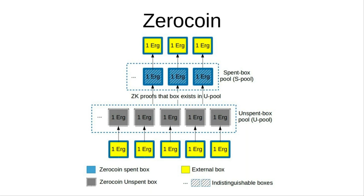This tells us that the s-pool must never remove serial numbers, making it monotonically increasing. Similarly, the u-pool is also monotonically increasing because boxes are never removed from it. This causes the scalability issue I was discussing — we have to maintain a monotonically increasing UTXO set in memory, and these two pools are exactly what that UTXO set is.